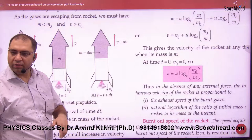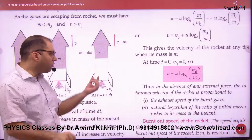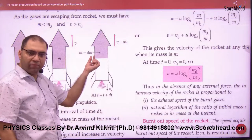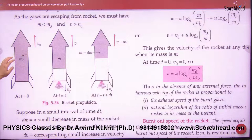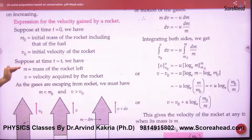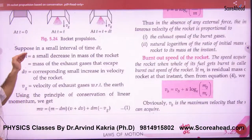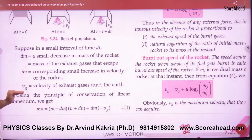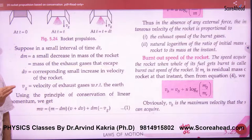The velocity becomes V plus DV — slowly the rocket's velocity is gaining. The mass is coming down from M to M minus DM. To clarify with the diagram: M0 and V0 are the initial mass and velocity of the rocket. At any instant, M and V are mass and velocity at time T. DM is the mass of fuel burned, DV is the increase in velocity of the rocket, and Vg is the velocity of exhaust gases with respect to Earth.